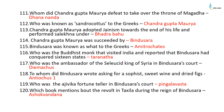Chandragupta Maurya defeated Dhanananda to take over the throne of Magadha. He was known as Sandrocottus to the Greeks. Chandragupta Maurya adopted Jainism towards the end of his life and performed Sallekhana under Bhadrabahu. He was succeeded by Bindusara, who was known as Amitrokates, or destroyer of foes, to the Greeks. The Buddhist monk Taranath visited India and reported that Bindusara had conquered 16 states. Damaxcus was the ambassador of the Seleucid king of Syria in Bindusara's court.